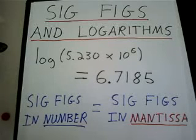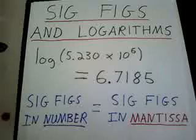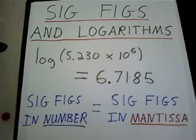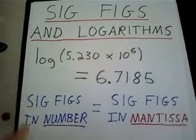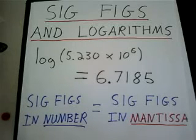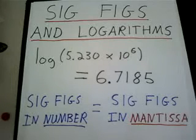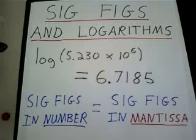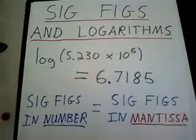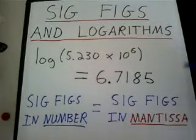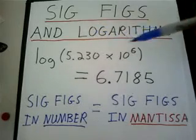In this video, I'm going to talk about significant figures and how to apply them when it comes to logarithms. I'm going to start with an arbitrary example: the logarithm of 5.230 times 10 to the 6. The basic rule here, if you want to apply the right amount of significant figures in the logarithm, is that you're going to look at the number of significant figures in the number of which you are taking the logarithm.